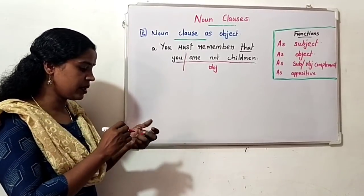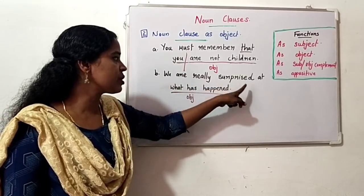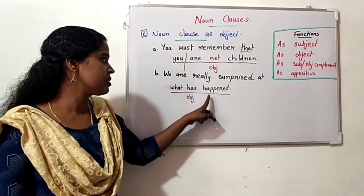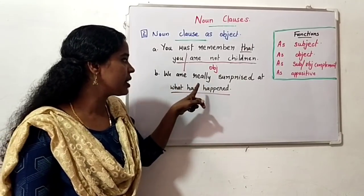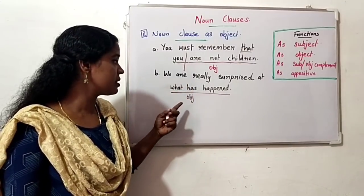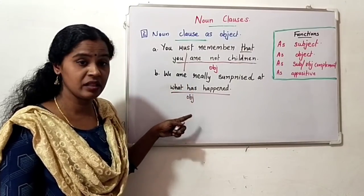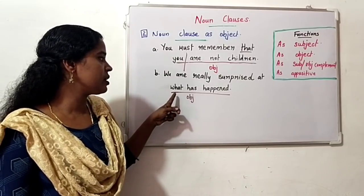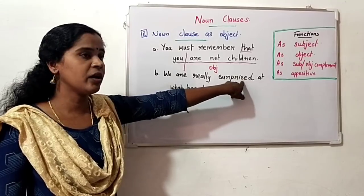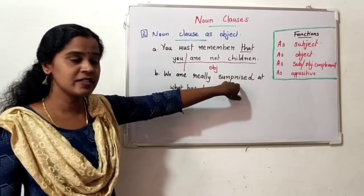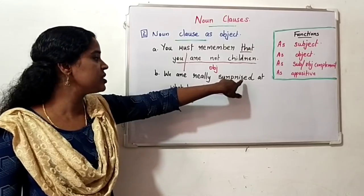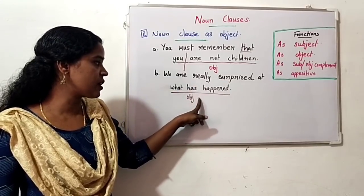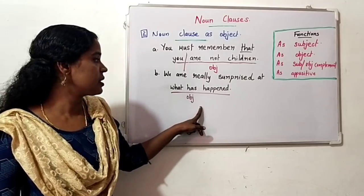Another example: 'We are really surprised at what has happened.' 'What has happened' is the object — we are talking about a noun after the verb. So that is the object of this sentence.